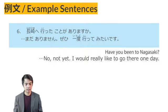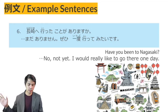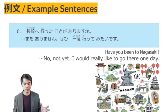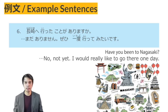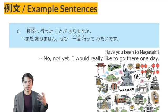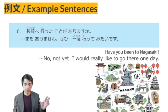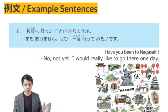Example sentence number 6: Nagasaki e itta koto ga arimasu ka? Mada arimasen. Zehi ichido itte mitai desu. NAGASAKI E — to Nagasaki — ITTA KOTO GA ARIMASU KA — have you been to Nagasaki? Mada arimasen — no, not yet. ZEHI expresses hope to do or experience something. ITTE MITAI DESU — using the verb TE MIMASU — I really want to go.